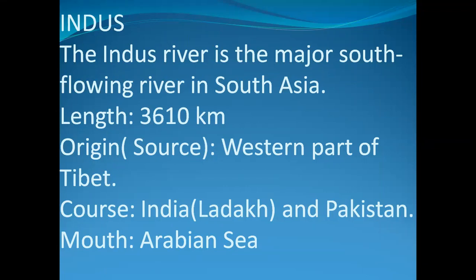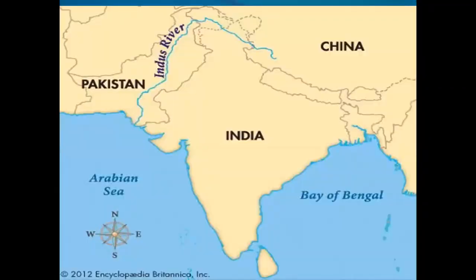The path the Indus river takes goes through Ladakh and Pakistan and then into the Arabian Sea. The Indus river's origin is in Tibet and it runs a course through northern India, Ladakh into northern Pakistan, and then flows along the entire length of Pakistan's Punjab to merge into the Arabian Sea.